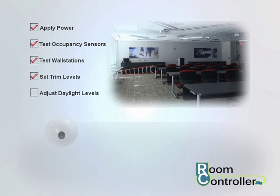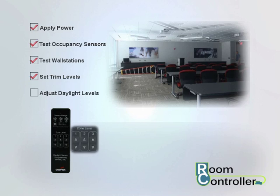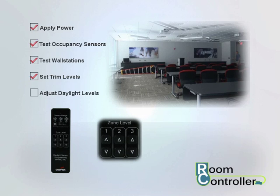If your room controller has a daylight sensor connected, the room controller will begin to operate from the sensor immediately after power-up. Daylight levels can be adjusted using the handheld programming remote. The remote control contains zone level raise and lower buttons for zones 1, 2, and 3.